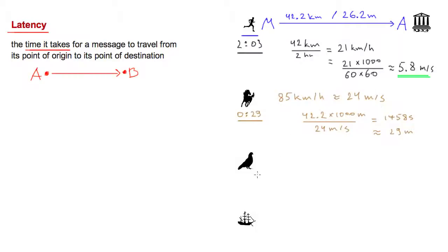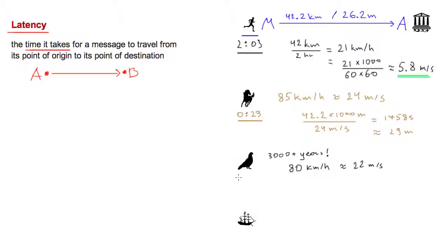Another way we can deliver the message is with a homing pigeon — a method that has been in use for over 3,000 years. Both the Egyptians and the Persians used homing pigeons to deliver messages. The speed of a pigeon varies, but on average they travel at about 80 kilometers per hour, which works out to approximately 22 meters per second. Repeating the same calculation, the total delivery time is approximately 31 minutes — very similar to the horse, but still about four times faster than on foot.